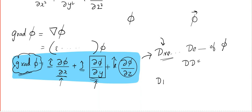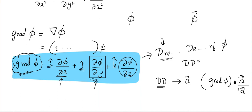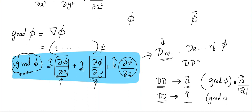If you want the directional derivative in the direction of a particular vector a, you have to take the projection. The formula is grad φ · a / |a|. So you are taking the projection of the gradient in the direction of a. The special cases are: if they ask for the directional derivative in the direction of the x-axis, that is just ∂φ/∂x, which equals grad φ · î. Similarly for j and k, you simplify using the partial derivatives.